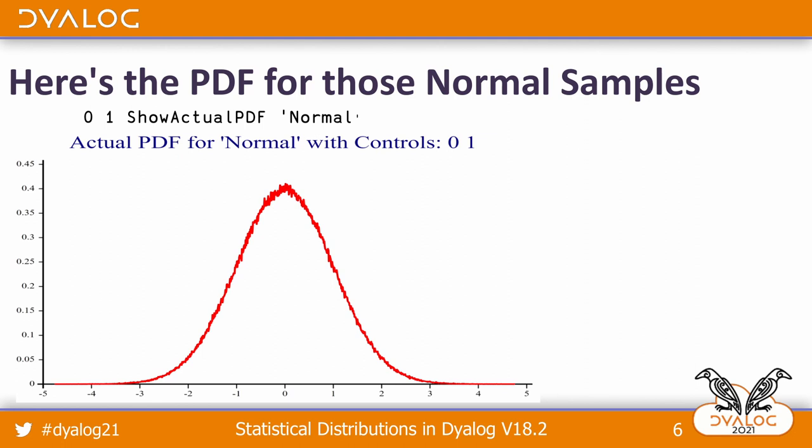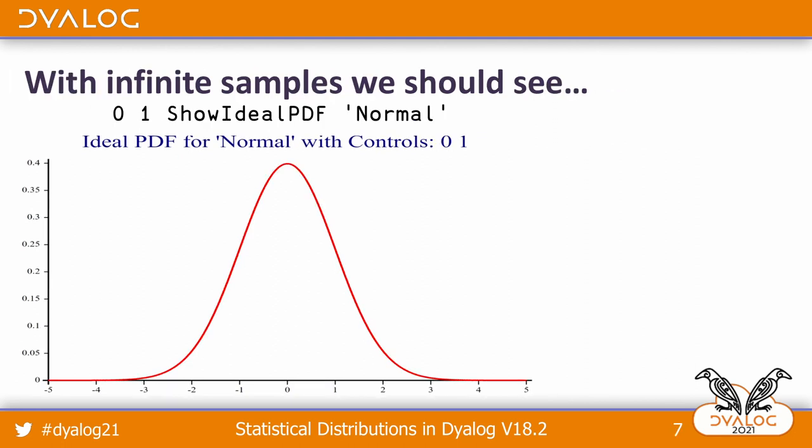It's often more interesting to look at this graphically. This is an extension of the kind of PDF we first showed for question mark six. The thing you'll notice is the graph looks kind of fuzzy, and the property of statistics is if we had many more samples, it would get smoother. With an infinite number of samples, this is what our graph should look like.